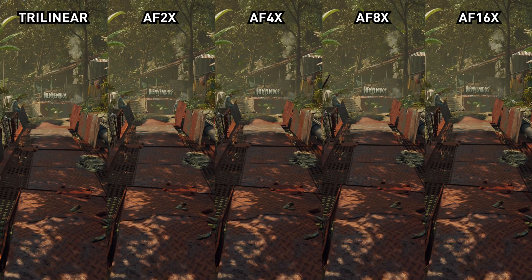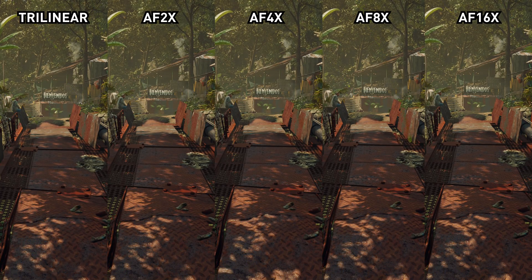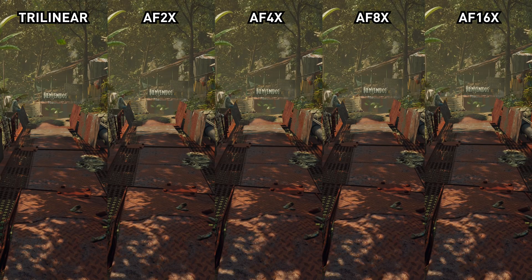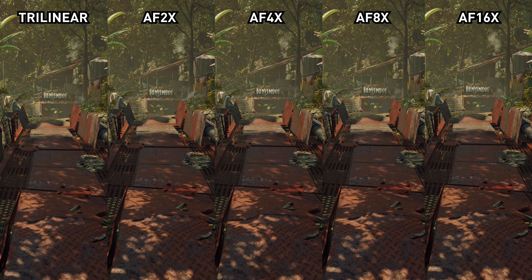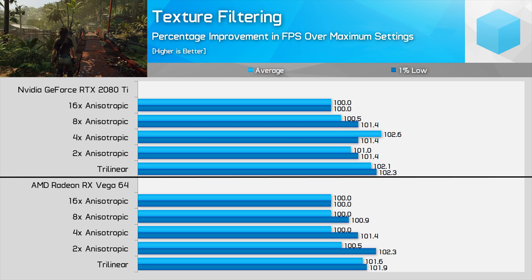Texture filtering is interesting because it's set to just 8x when using the highest preset and just 4x on the high preset. Visually there's a subtle difference between the maximum 16x and lowest 2x anisotropic modes, but distant and off-angle textures are noticeably clearer when using 16x compared to 2x. There's only a small performance difference between 16x anisotropic and bilinear filtering, especially on Vega 64. My recommendation is to crank it to 16x — it's a bit bizarre that 4x is the default for the high preset.